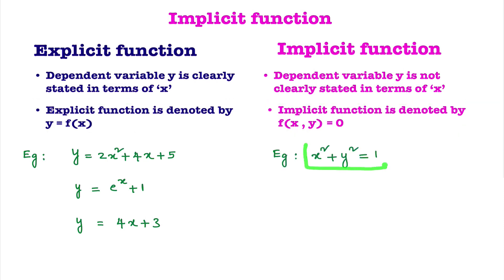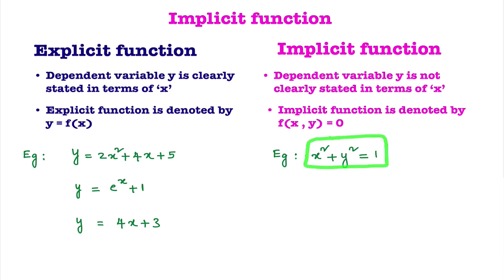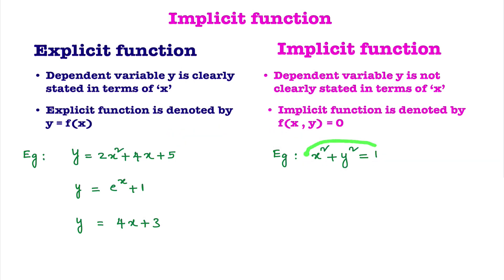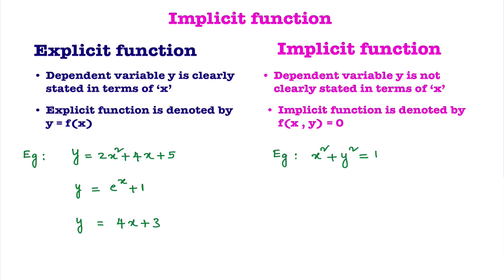Consider the example x squared plus y squared equal to 1. By seeing this equation, is y clearly stated in terms of x? No. So this is an example of an implicit function. However, this implicit function can be converted into an explicit function — we can write y in terms of x from this equation. In the given equation, y is not clearly stated in terms of x, but this particular implicit function can be converted into an explicit function.